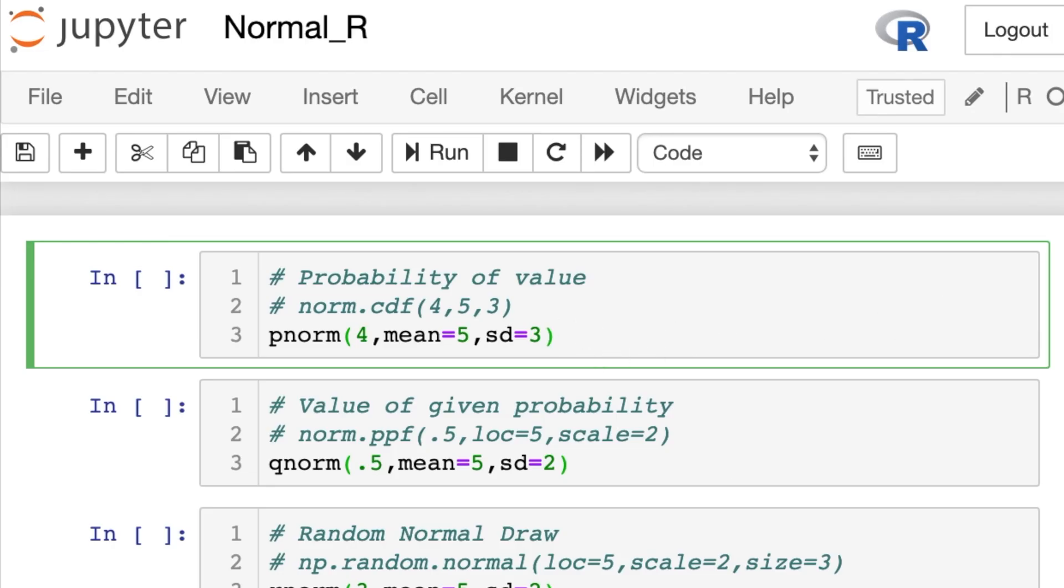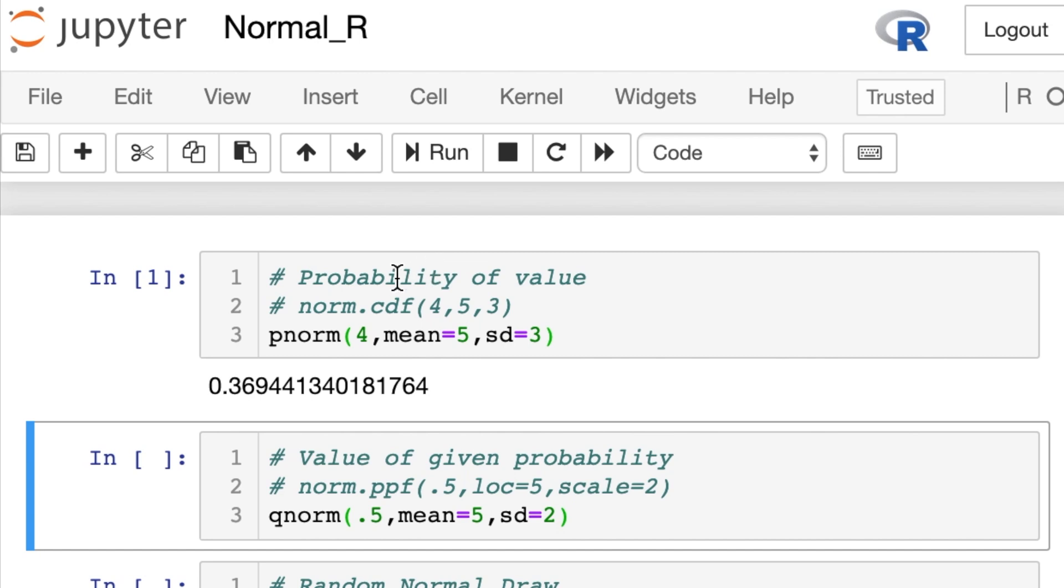We're going to run this pNorm function. pNorm takes in a value, the mean, and the standard deviation for the normal distribution, and it returns the probability of that value. Now, you can see the second comment I have there is actually how you run the same thing in Python with norm.cdf.